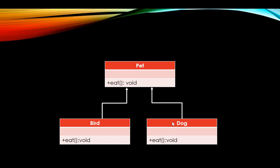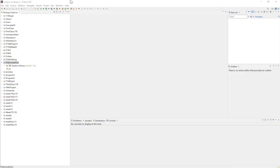Since the dog is a pet and the bird is a pet, I can create an object reference of type Pet that could be pointing to a Dog or to a Bird. Let's implement that in Java and see why polymorphism is helpful.